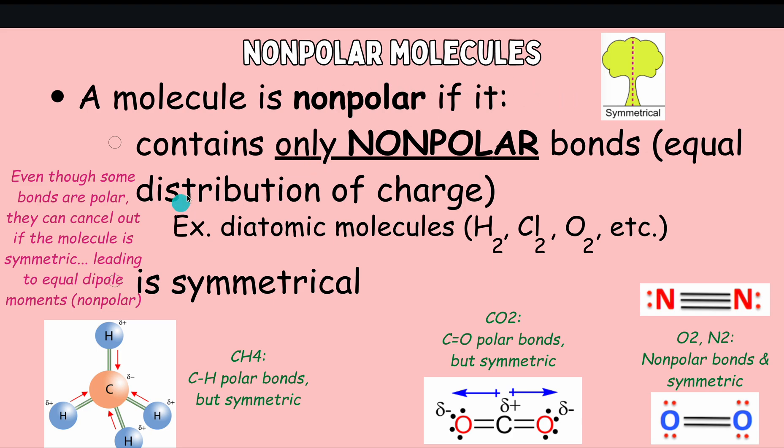Nonpolar molecules can also be symmetrical. So let's look at a few examples of these. Down here on the right shows you the Lewis dot structures for N2 and O2, which are two different diatomic molecules. We can see that the bonds are both nonpolar because they consist of two of the same atom. And if we were to slice these down the middle, we would see that they are symmetric. So they are the same on each side, almost like a mirror image of each other.